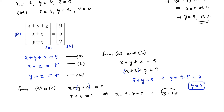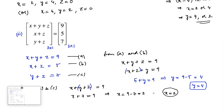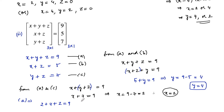Therefore x is equal to 2. Substituting x is equal to 2 and y is equal to 4 into the first equation gives 2 plus 4 plus z is equal to 9, which implies z is equal to 9 minus 4 minus 2. So 9 minus 4 is 5, and 5 minus 2 is 3. Therefore z is equal to 3. So the values of x, y, z are 2, 4, and 3.